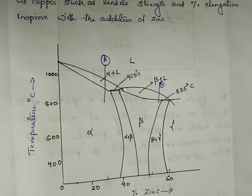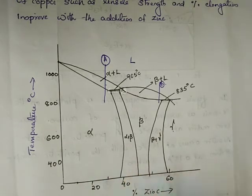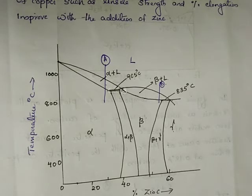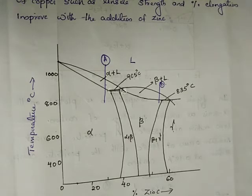When we change from liquid phase plus solid phase, the reaction is the peritectic reaction. The peritectic reaction exists in the region of 0 to 60% zinc. This is a very complicated phase diagram. It is commercially important, and the mechanical properties, including the percentage of tensile strength, increase in this region.